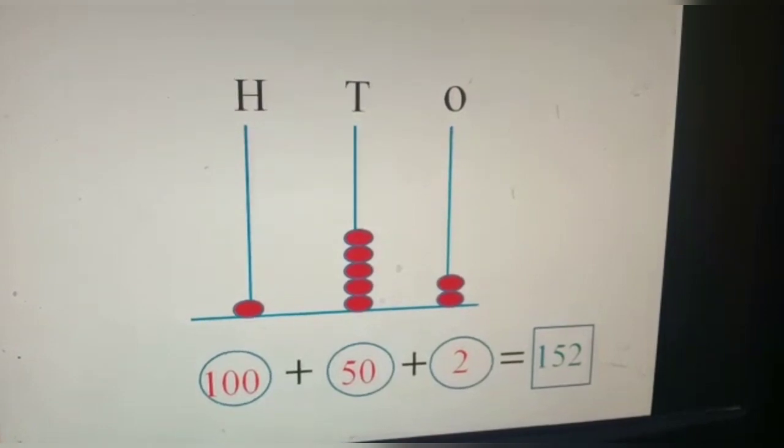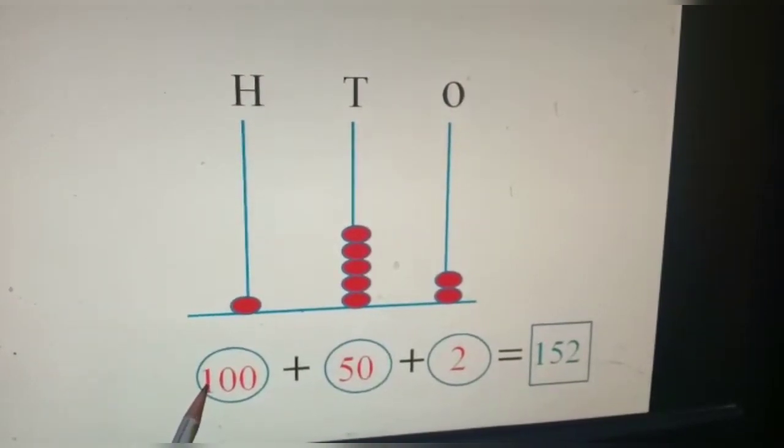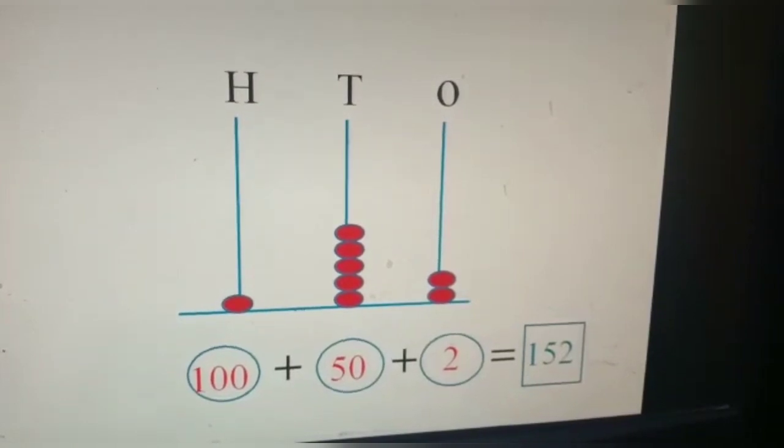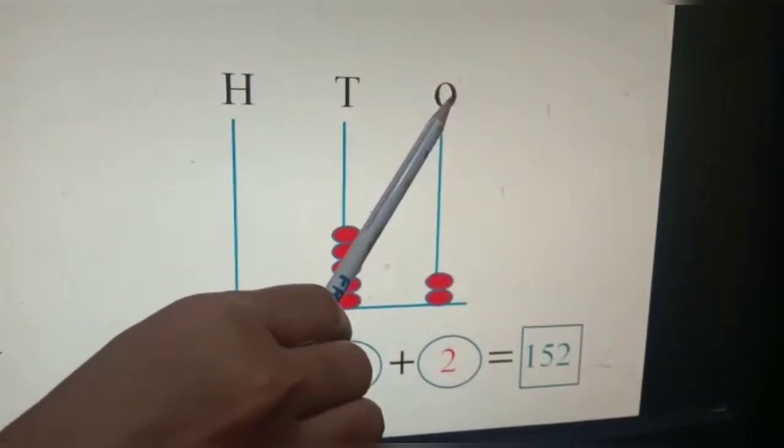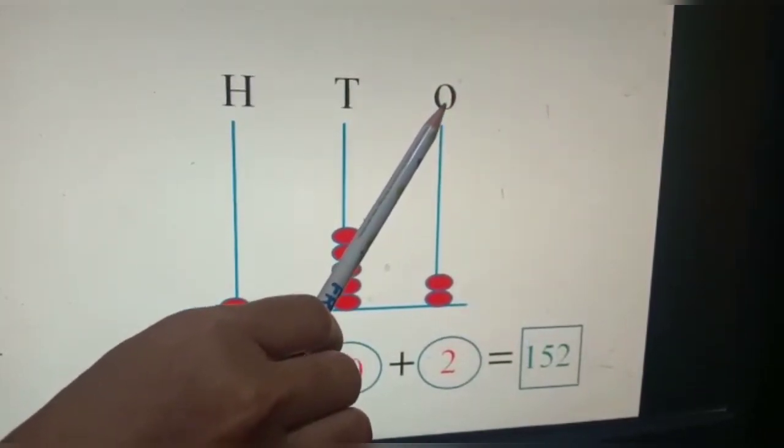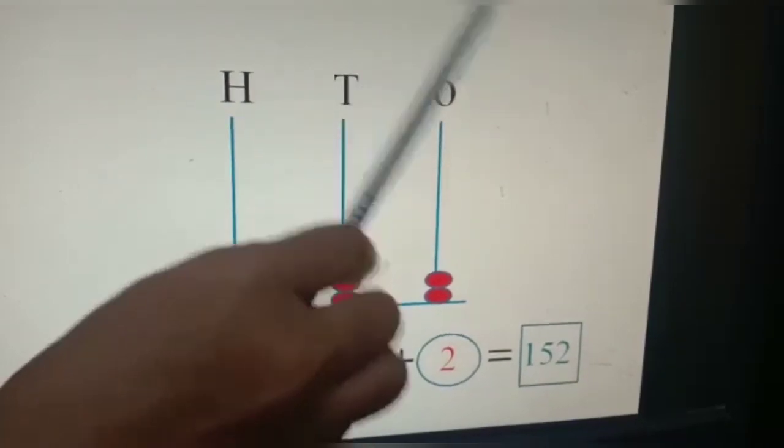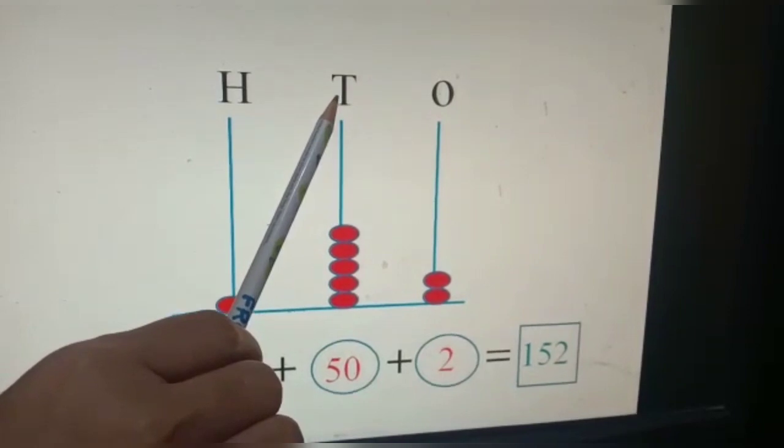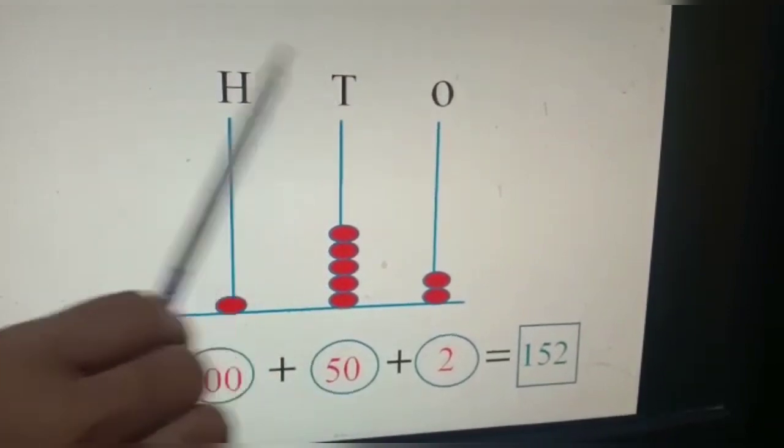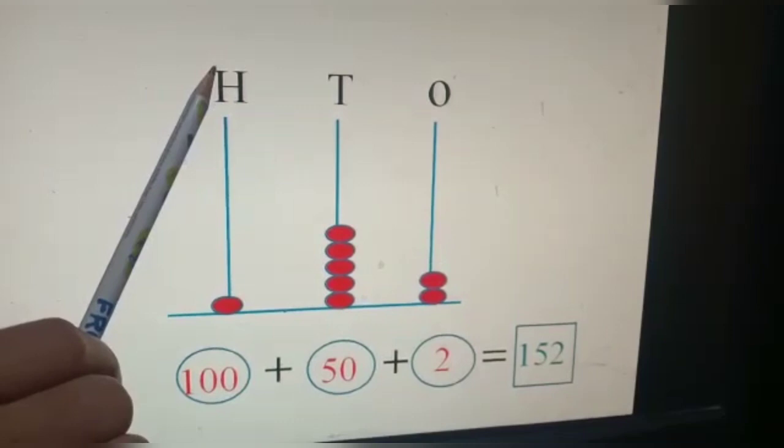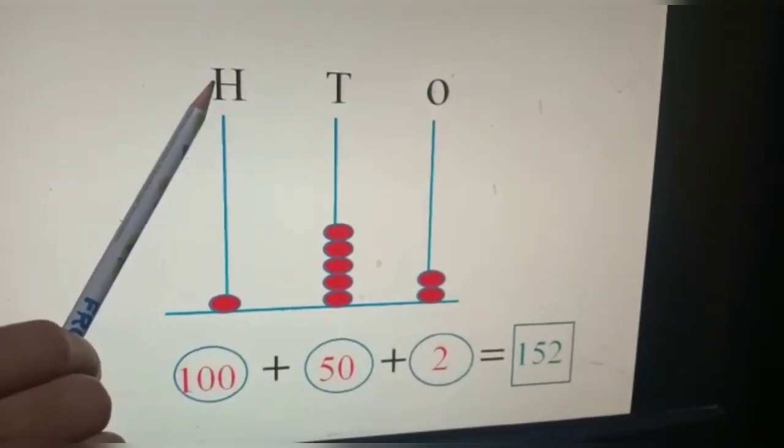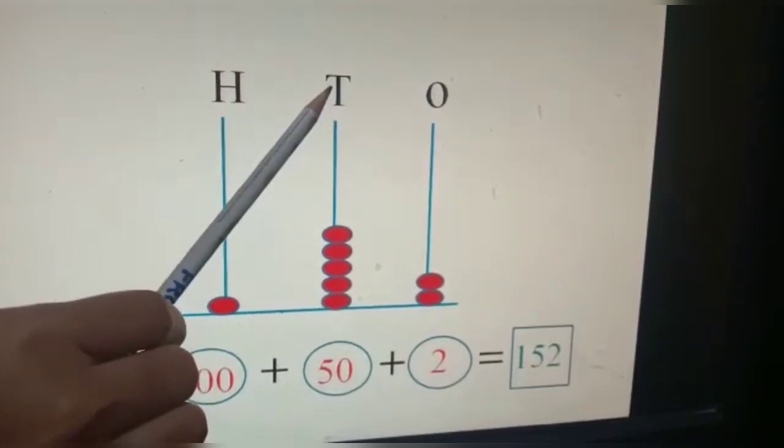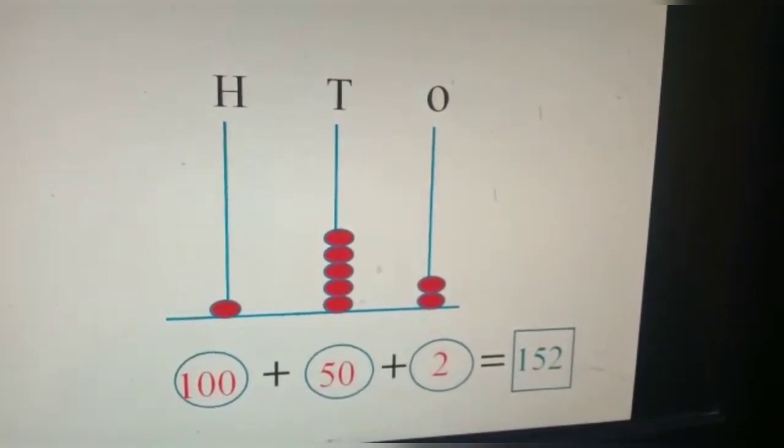Now, the next sum. Here in this abacus, we can see there are three places. As you all know, O stands for ones, which is always written on your right hand side. T stands for tens, which is written to the left of ones. And here we have hundreds. H stands for hundreds, which is written to the left of tens.